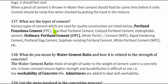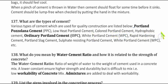Today we will discuss the remaining interview questions. Question 137: What are the types of cements? Various types of cements used for quality construction are listed below: Portland Pozzolana Cement (PPC), Low Heat Portland Cement, Polar Portland Cement, Hydrophobic Cement, Ordinary Portland Cement (OPC), White Portland Cement (WPC), Rapid Hardening Cement, Portland Slag Cement.